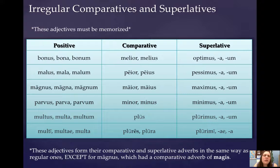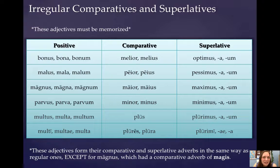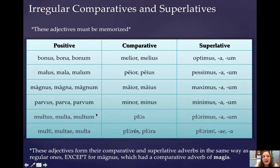That brings us to multus, multa, multum — the singular of the word for many. Remember that in the singular, multus means much. In English the singular of this word is 'much' and the plural is 'many,' and it works that way in Latin too. Multus, multa, multum means much, which means plus means more, and then plurimus, plurima, plurimum, which means very many. That's really the best way to translate plurimus. What I need to show you is that plus, as the comparative of multus, multa, multum, is not actually an adjective here — it functions as a neuter noun, and I'm going to talk about that a little bit on the next page.